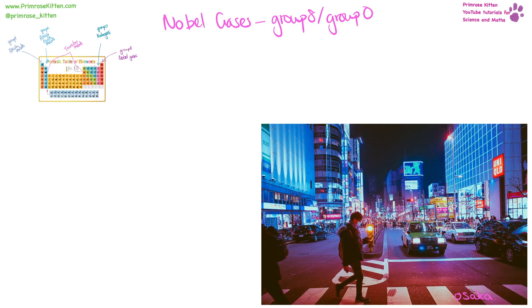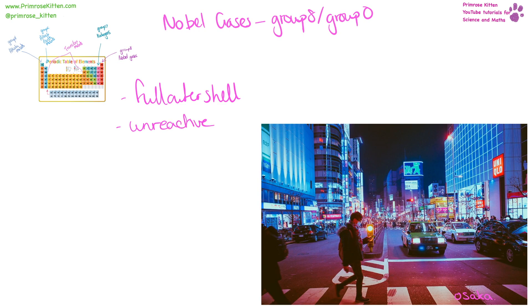Noble gases have a full outer shell. Because they have a full outer shell, they don't want to gain or lose any electrons, which means they are really, really unreactive. And because they are unreactive, they actually have quite a lot of uses. Helium we use in balloons, and they are also used in neon lights, as you can see here in the amazing city of Osaka.